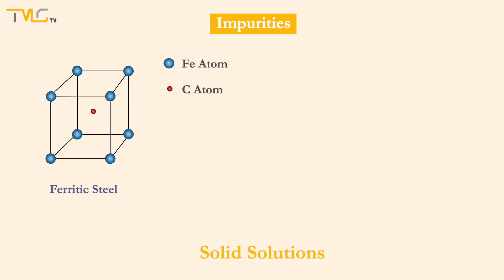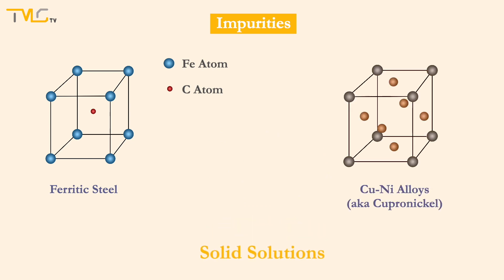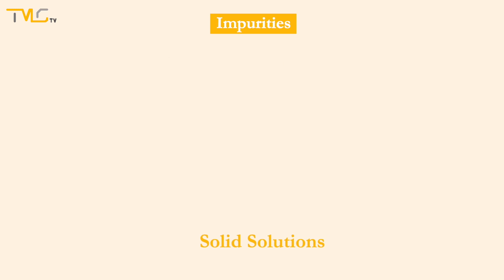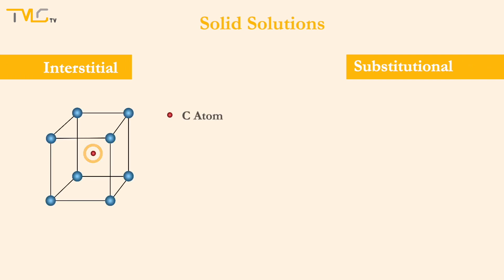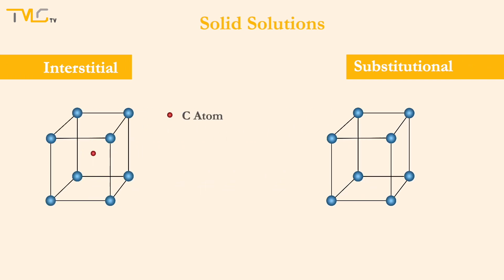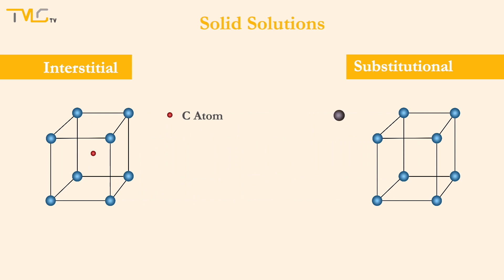In addition to steel, copper-nickel alloys are another common example for solid solutions. Solid solutions can be either interstitial or substitutional. For steel, tiny carbon atoms occupy interstitial sites, forming an interstitial solid solution. On the other hand, if chromium is added to iron instead of carbon, then a substitutional solid solution would be seen, since the chromium atoms are too large to fit into the lattice interstitially. Instead, they replace iron atoms and enter the lattice substitutionally.